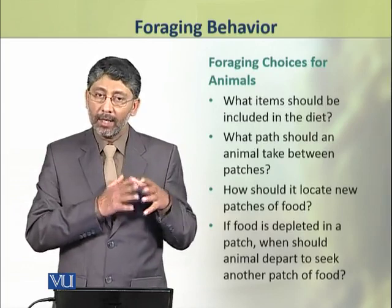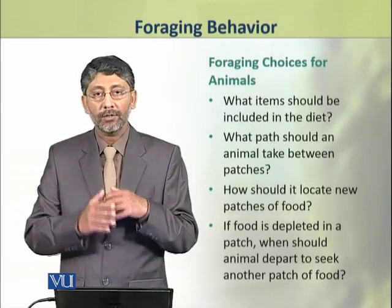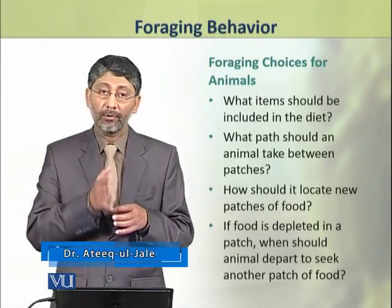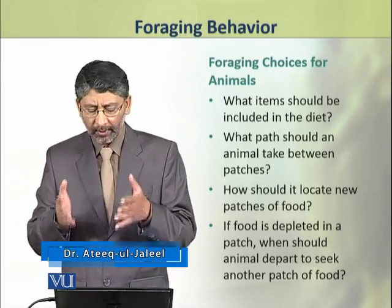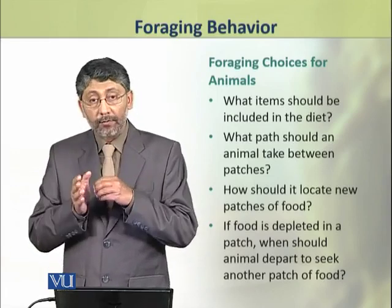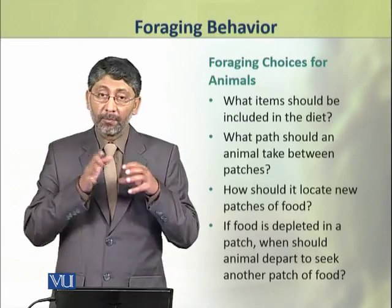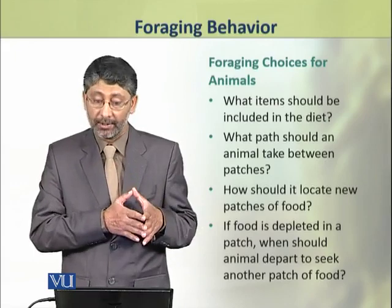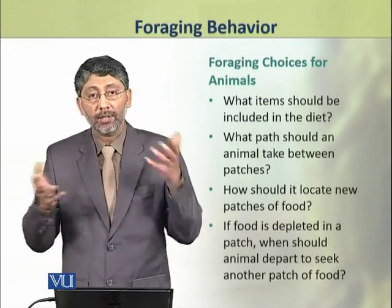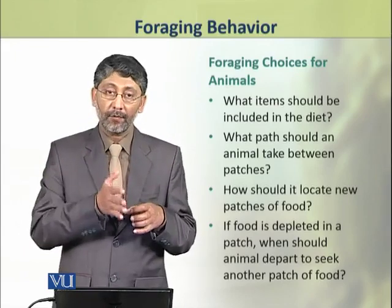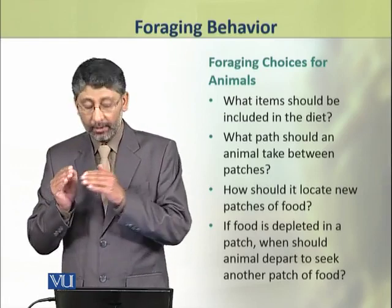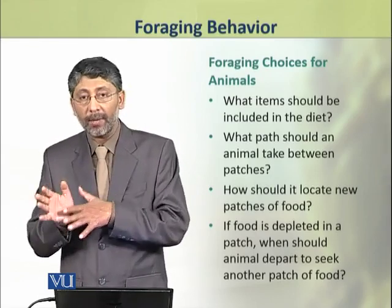An animal living in an environment has certain available choices of food, and the animal has to make decisions about these choices. These choices include what items should be included in the diet, what path should an animal take between patches, how should it locate new patches of food, and if food is depleted in one patch, when should an animal depart to seek another patch?